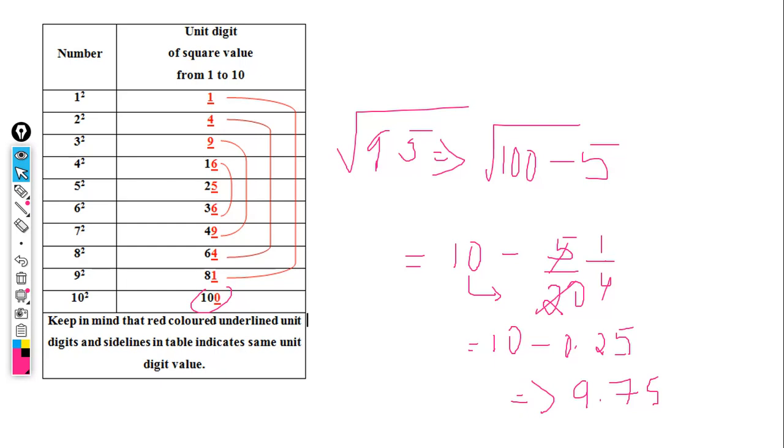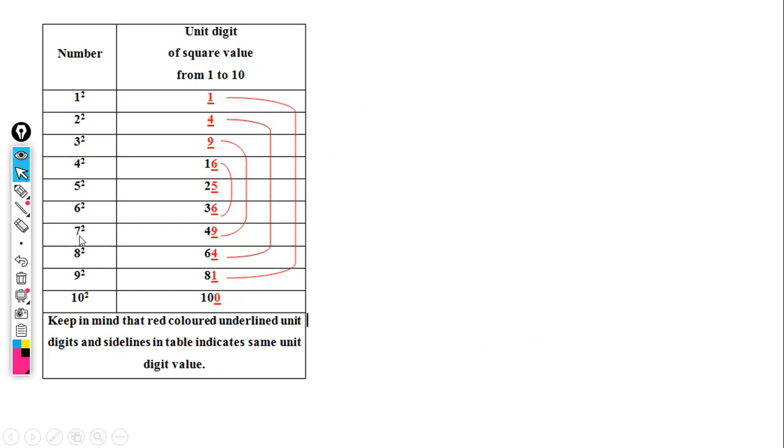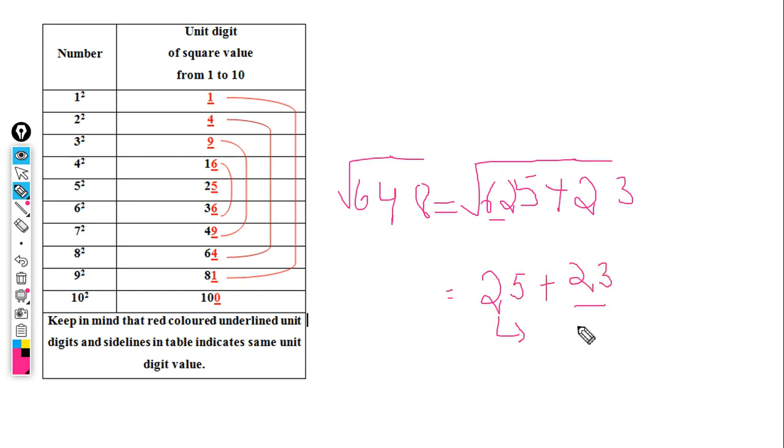I'll take one more example: the square root of 648. This is a non-perfect square close to 625, which is 25 squared. So 625 plus 23 equals 648. Since the square root of 625 is 25, we use that as our base. The difference is 23, and double of 25 is 50.